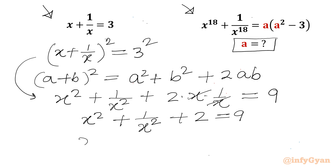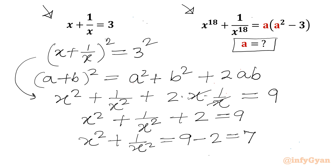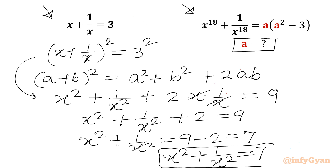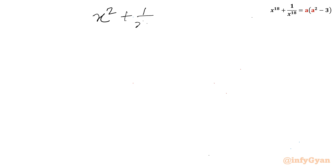So I can write x squared plus 1 over x squared plus 2 equal to 9, or x squared plus 1 over x squared equal to 9 minus 2, which will be 7. This is Equation number 1: x squared plus 1 over x squared equals 7.